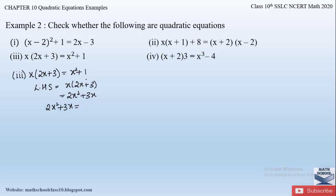Equating with the right-hand side: 2x² + 3x = x² + 1. Sending the right-hand side to the left: 2x² + 3x − x² − 1 = 0. Combining the x² terms: 2x² − x² = x². So we get x² + 3x − 1 = 0.